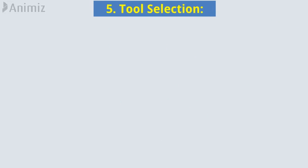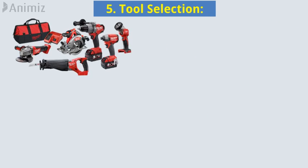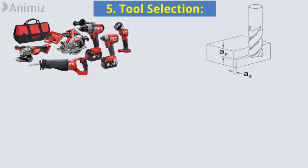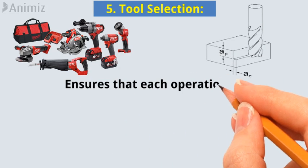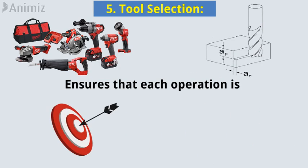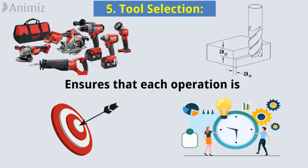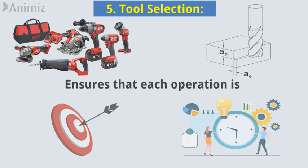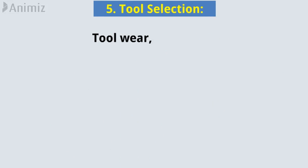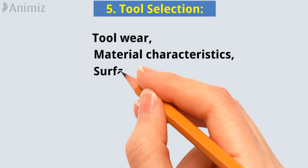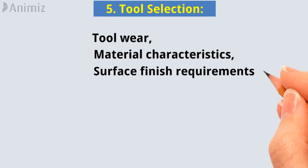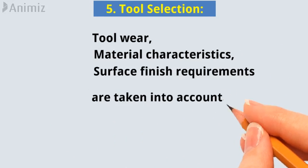5. Tool Selection: The selection of appropriate tools and cutting parameters ensures that each operation is performed accurately and efficiently. Tool wear, material characteristics, and surface finish requirements are taken into account.